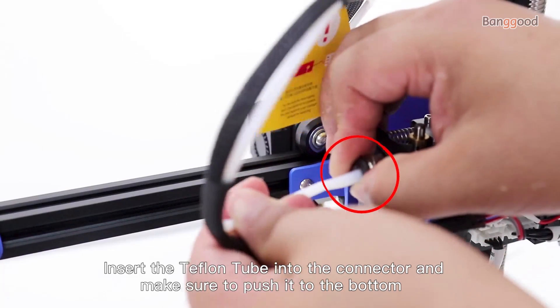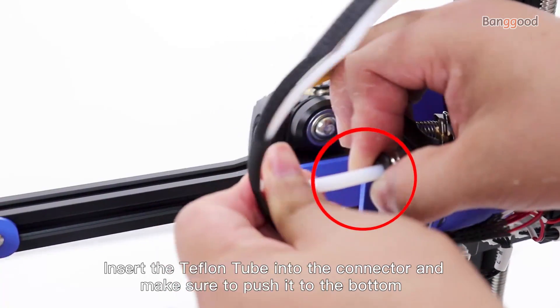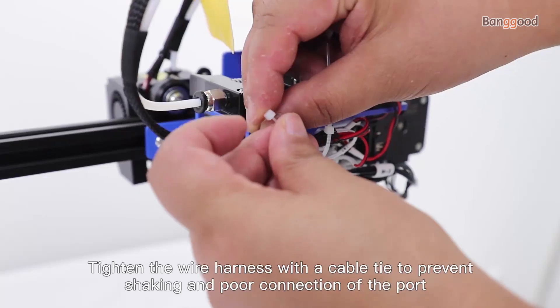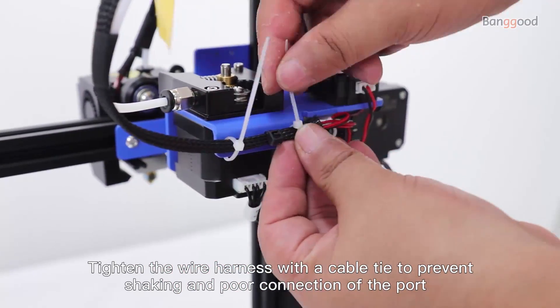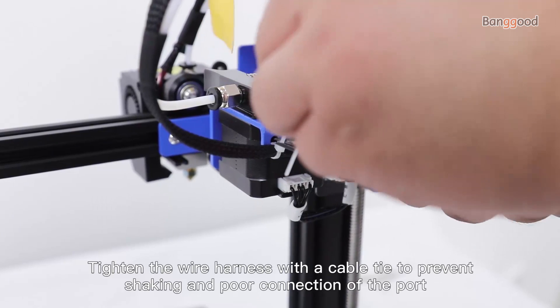Insert the tube into the connector and make sure to push it to the bottom. Tighten the wire harness with a cable tie to prevent shaking and pulling of the port connection.